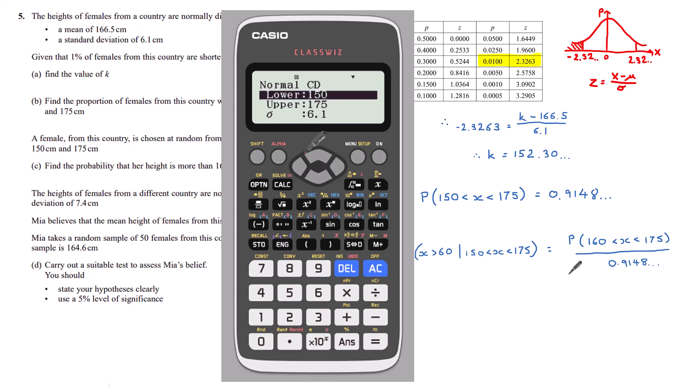Going back to our normal cumulative distribution, let's change the lower bounds to 160. The upper bound is still 175, our standard deviation and our mean remain unchanged. And so our probability between 160 and 175 is 0.7749 and so on.